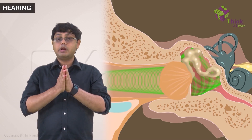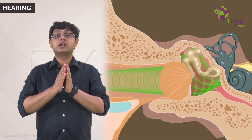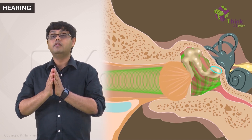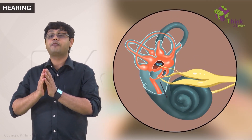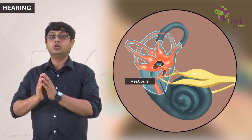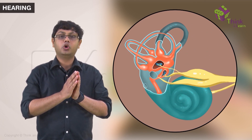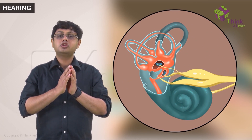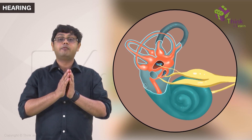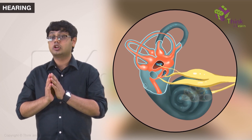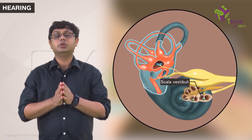Moving on — if you remember, the foot of the stapes covers the oval window, which is the connection with the perilymph-filled vestibule. The rocking motion of the stapes over the oval window causes pressure waves in the perilymph fluid. This gets transmitted to the cochlea through the scala vestibuli.